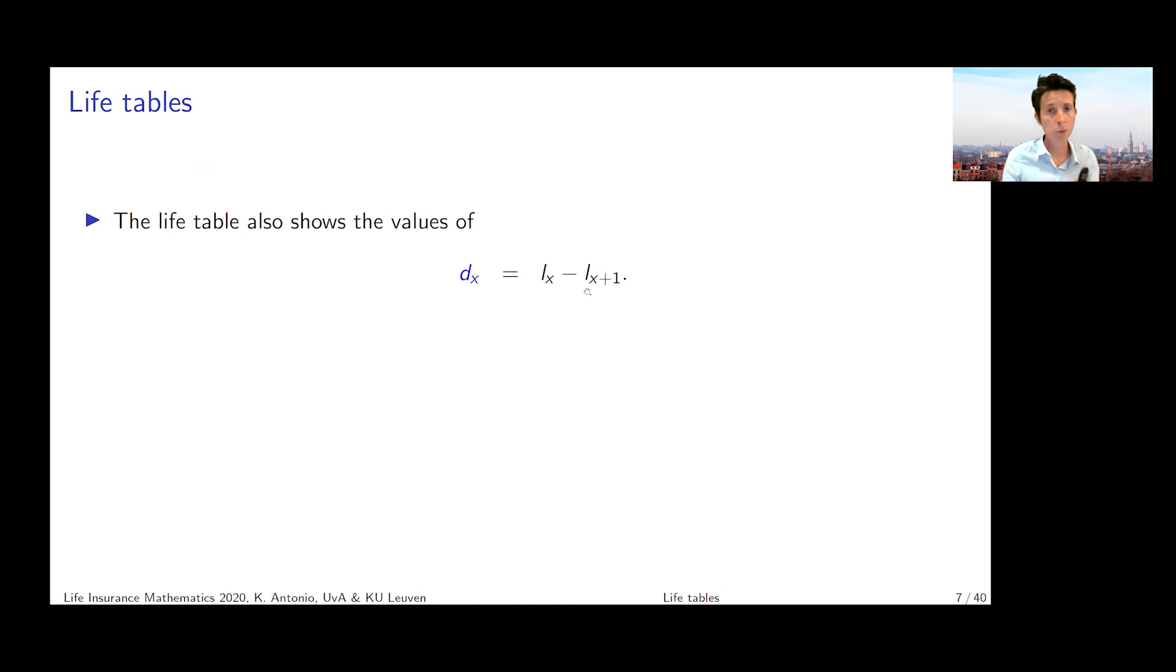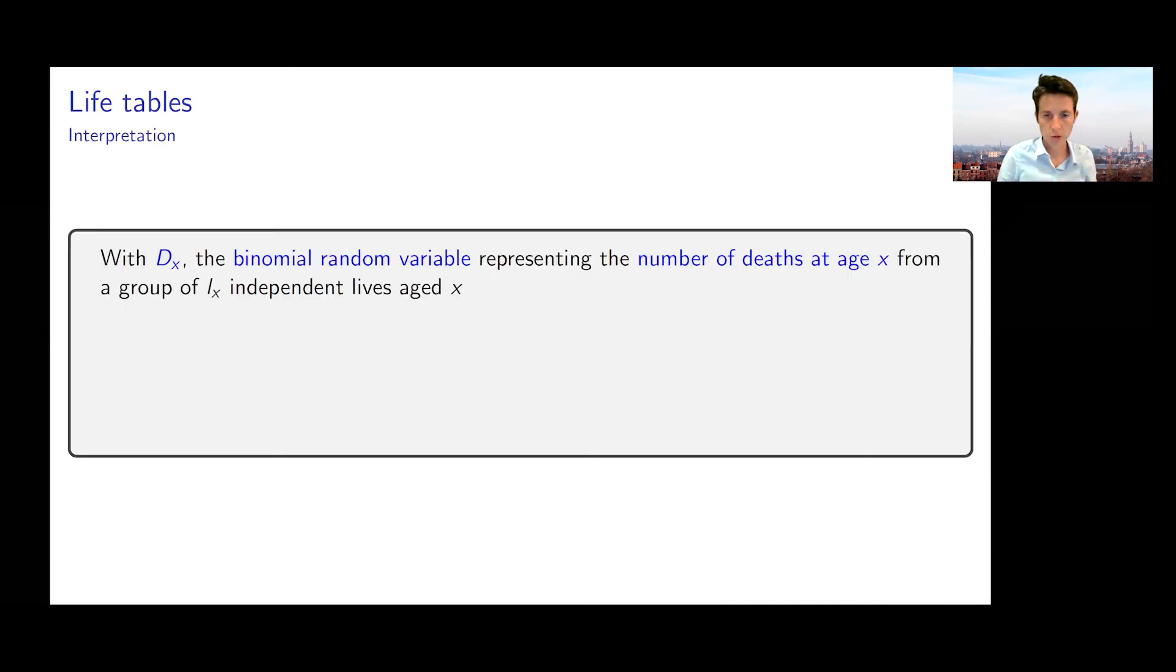The life table shows me the dx. How are these dx obtained? As the difference between lx and lx plus one—you have to put them in this order because lx will be a bigger number than lx plus one. You can massage this expression to see that dx is lx multiplied with qx, or put otherwise, qx is dx divided by lx.